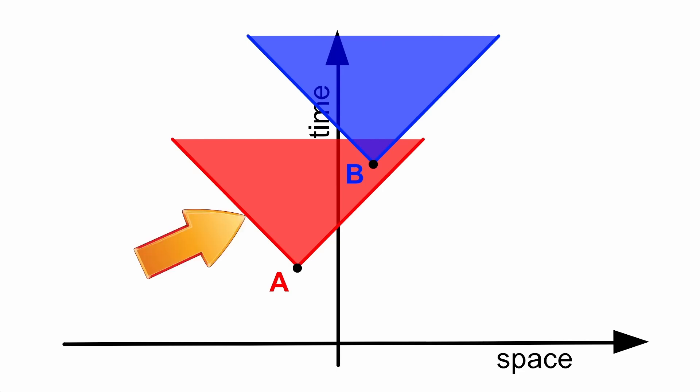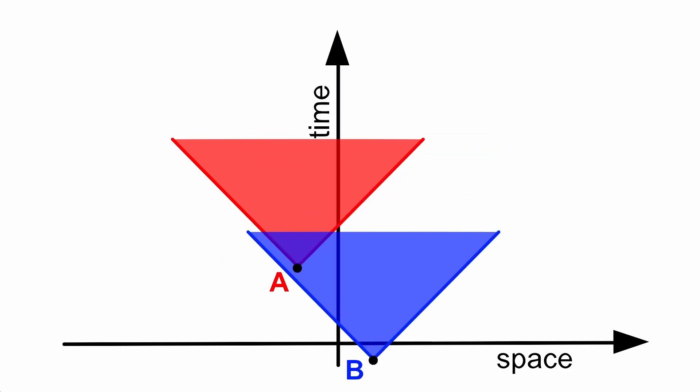It's called the inside of the future light cone, just so you've heard of it. If B was down here instead, then it could be a possible cause of A.